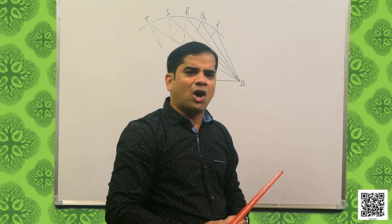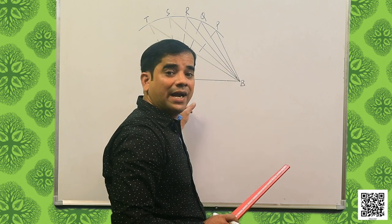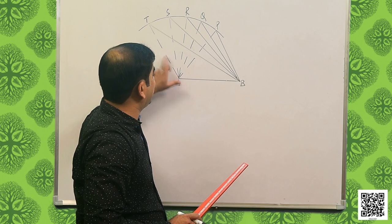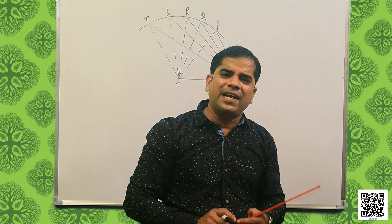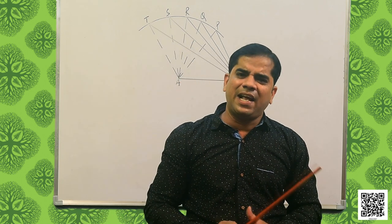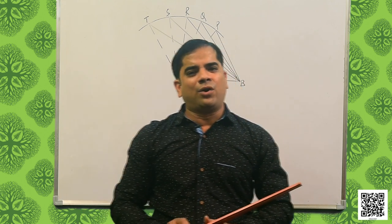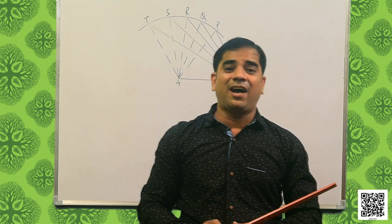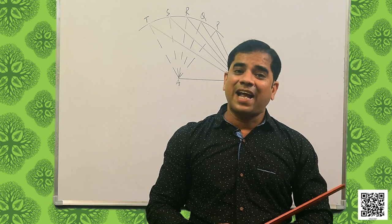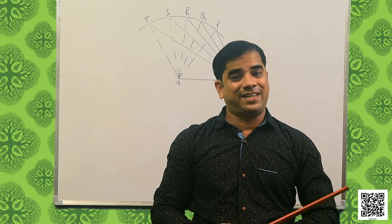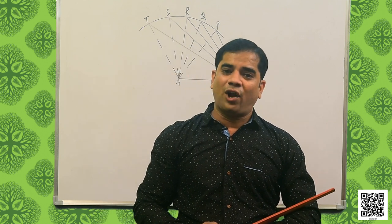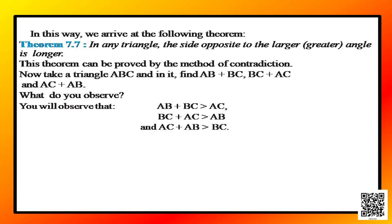Draw any triangle with all angles unequal to each other and measure the sides. You will observe that the side opposite to the largest angle is the longest. As given in figure 7.45, angle B is the largest angle and AC is the longest side. This confirms the converse of theorem 7.6, which leads us to theorem 7.7: in any triangle, the side opposite to the larger or greater angle is longer.